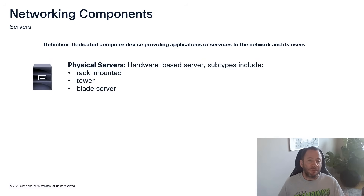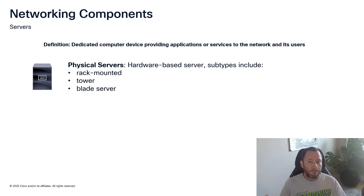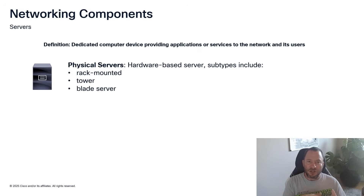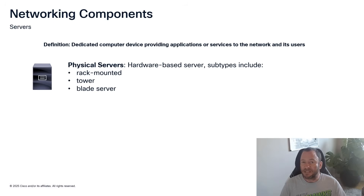There are two types of servers. First, physical servers — this is a piece of hardware. It can be a tower computer, but it could also be a rack mount server, like the Cisco UCS-C series. Then there are blade servers, where you have a chassis and each slot contains its own server — the Cisco UCS-B series is an example of that, along with other manufacturers.